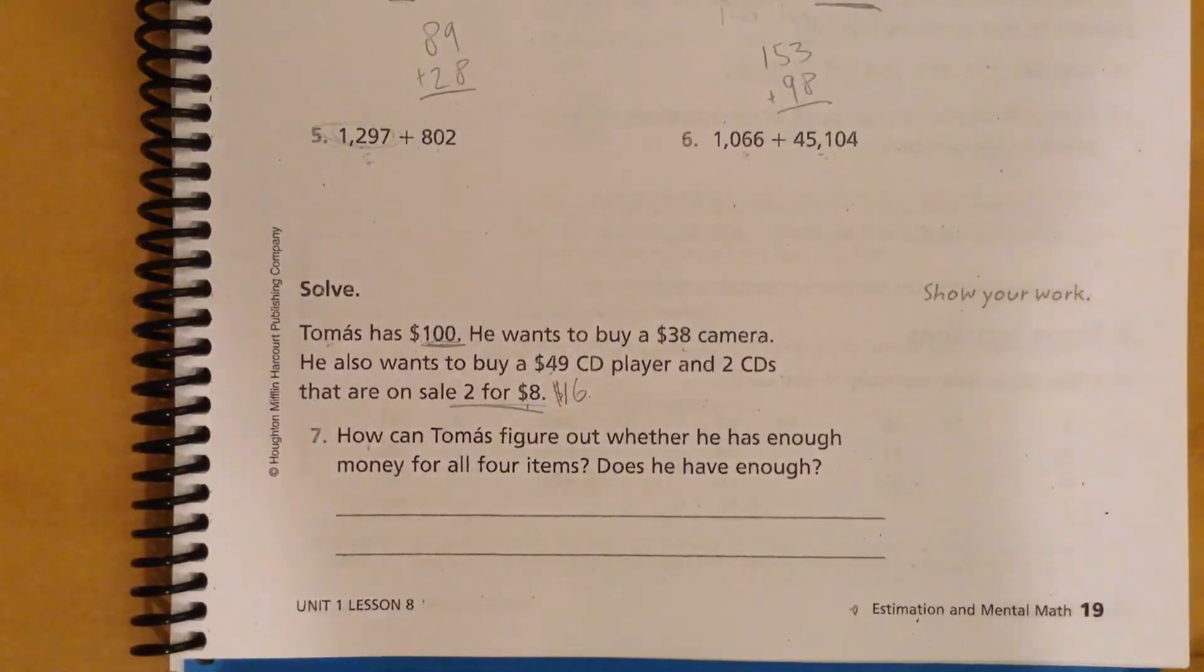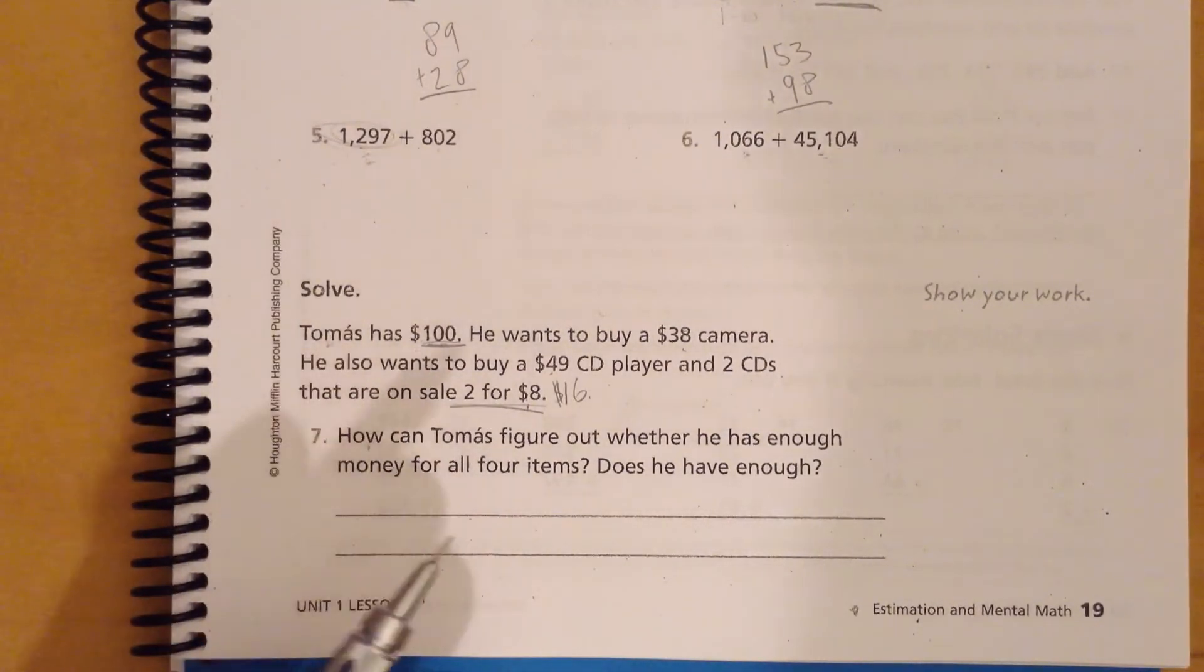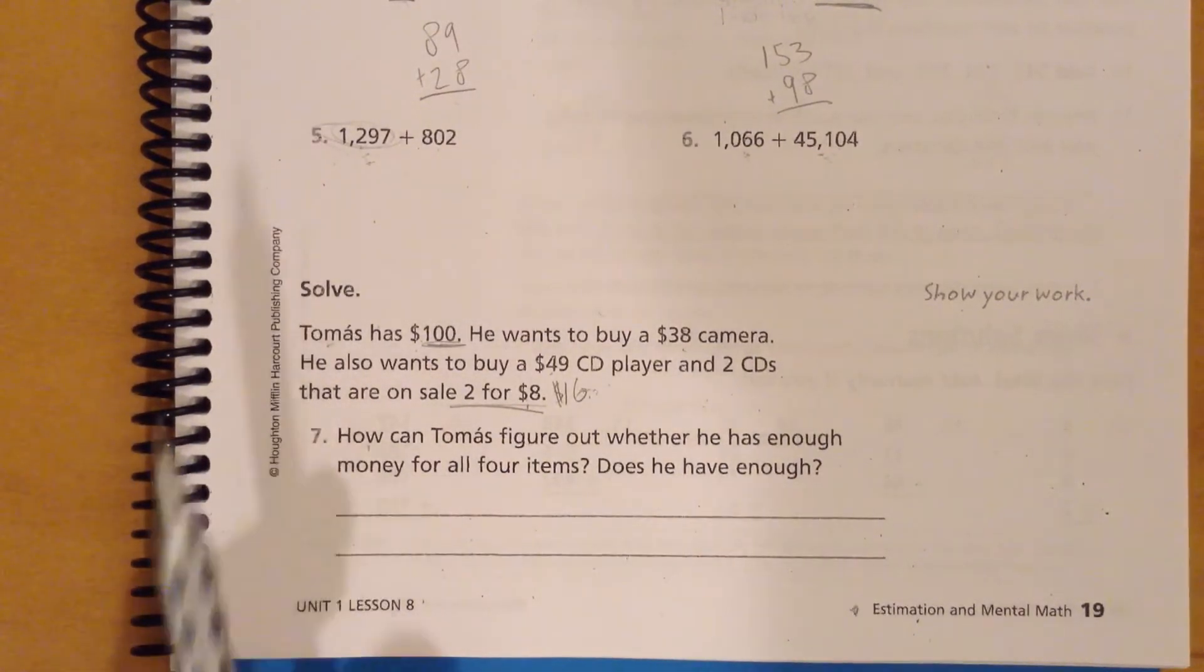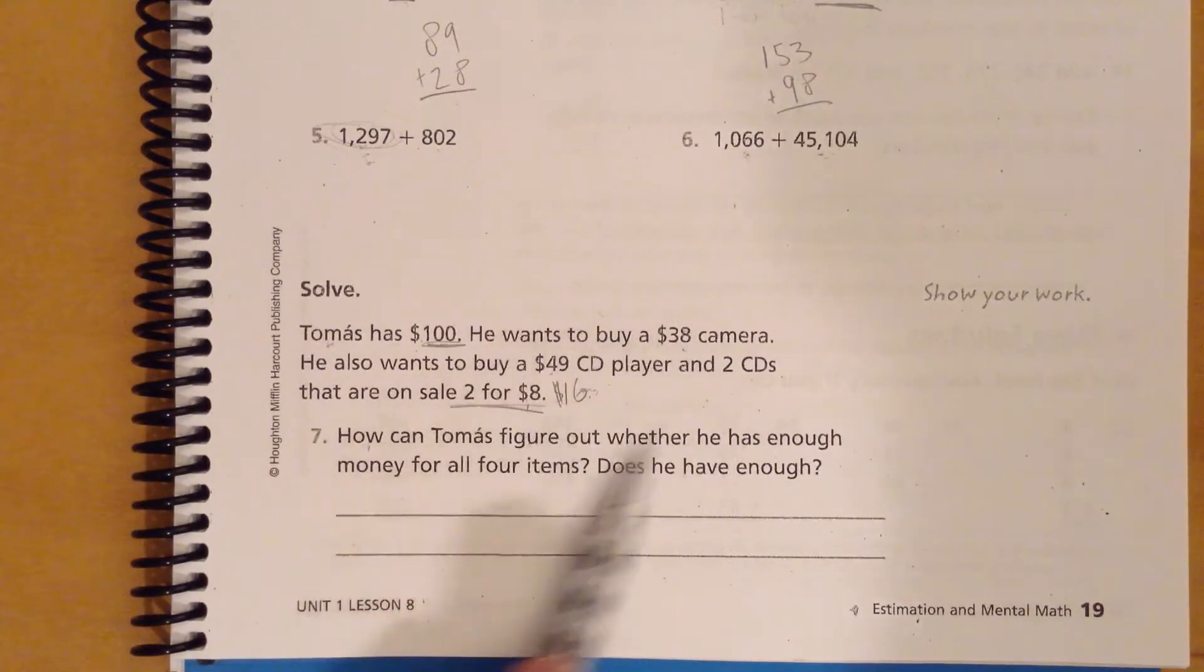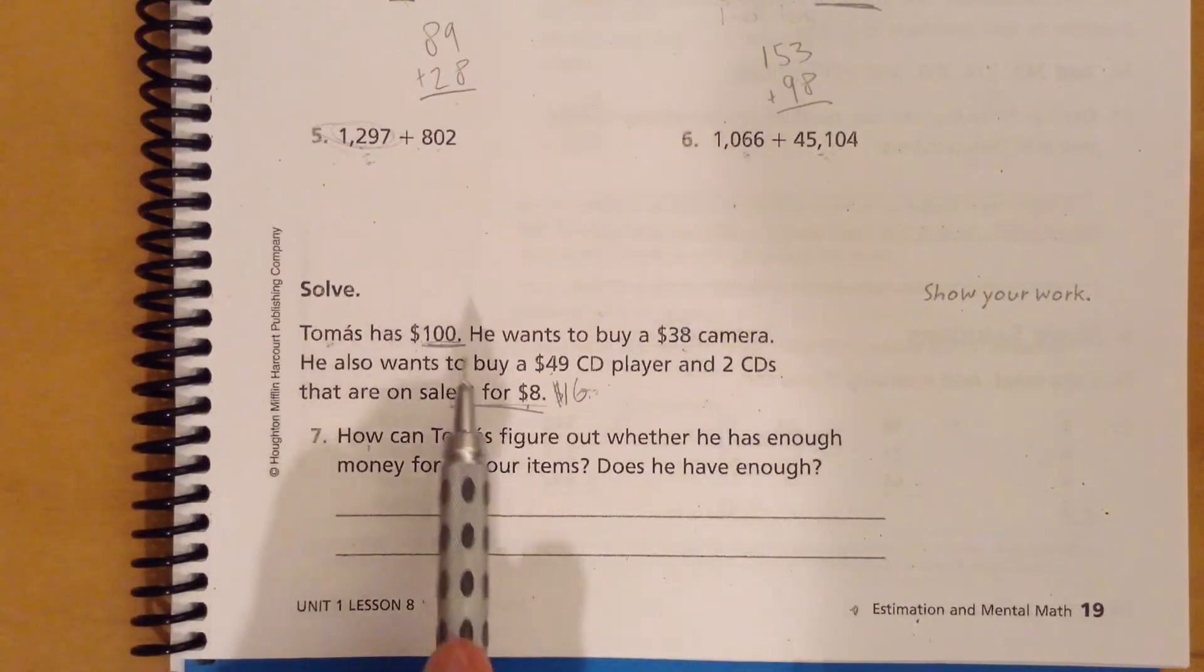we're going back to the whole point of this lesson, which is practicing a certain new skill. Hopefully, you remember what it is. It may be somewhere on this page, right? The word that we're looking for. And, like I said, this estimation is a skill that will help you when you're trying to buy things. And so, really, the point of this is to figure out about how much money he's going to spend on all of these. And then, what you want to do is figure out about how much he actually is going to spend and does he have enough money or not. Okay.